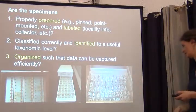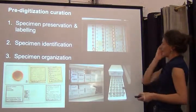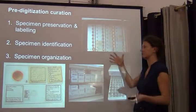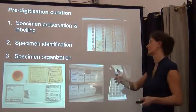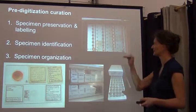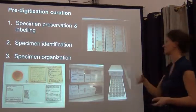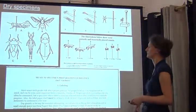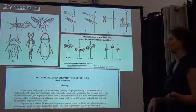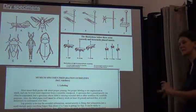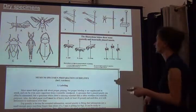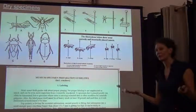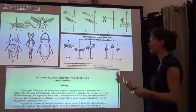Finally, think about how you want to organize your specimens within the collection to make workflows maximally efficient. Pre-digitization curation really means three big topics: specimen preservation and labeling, specimen identification, and organization.